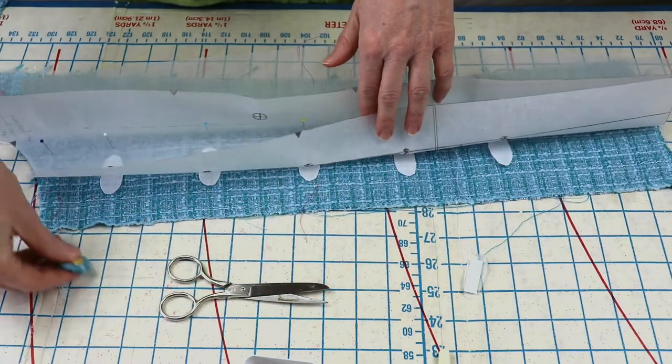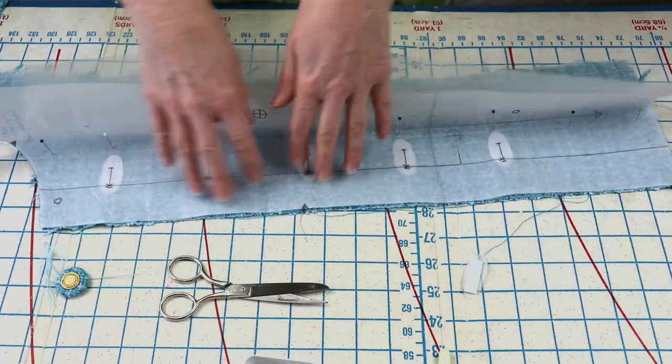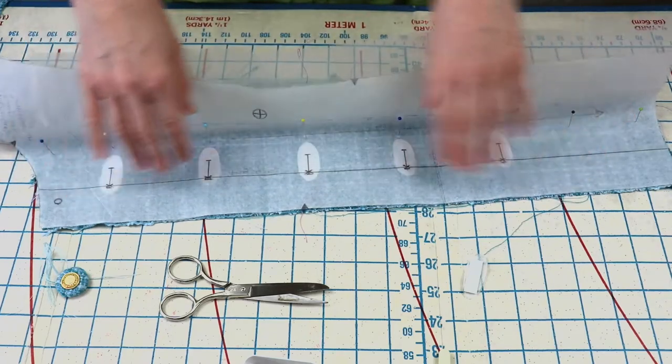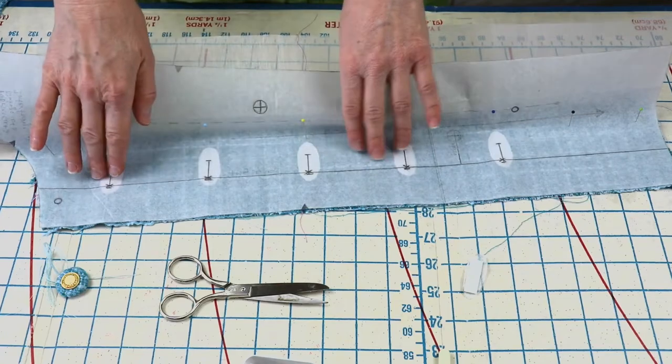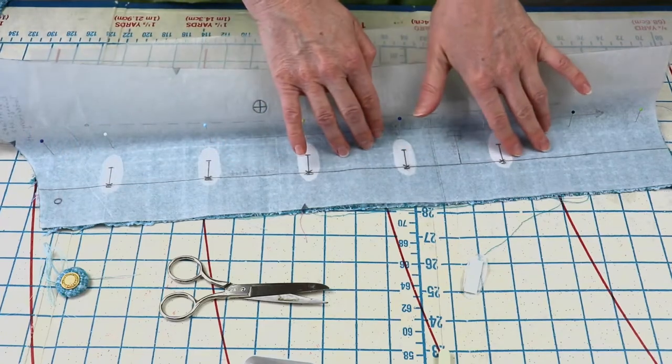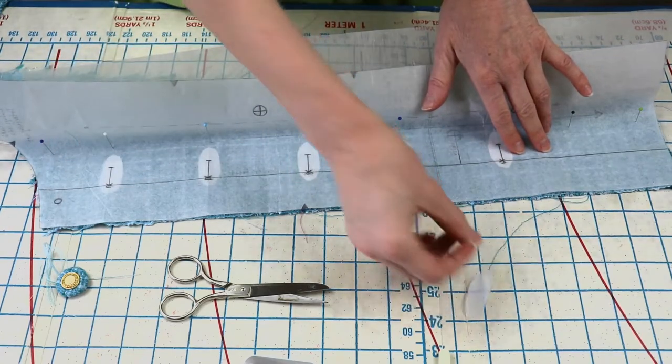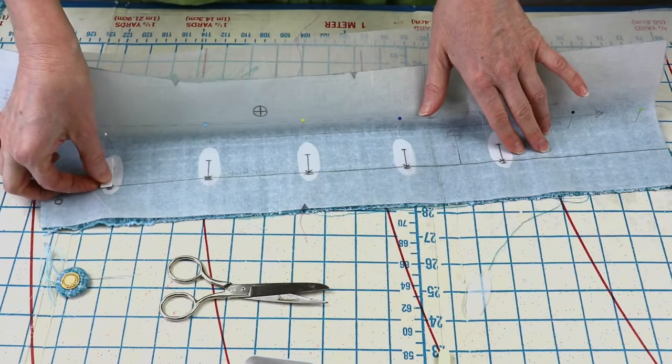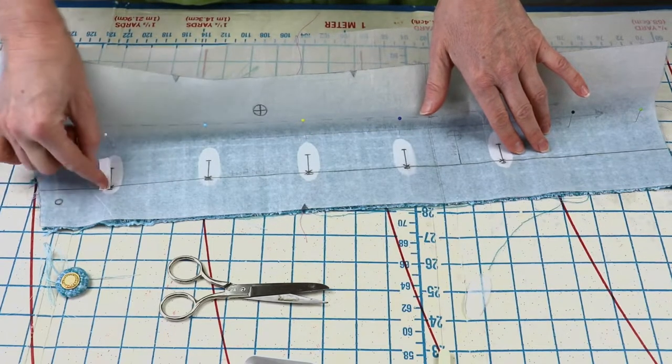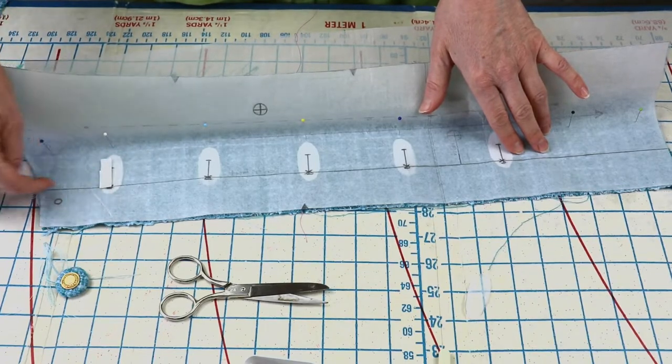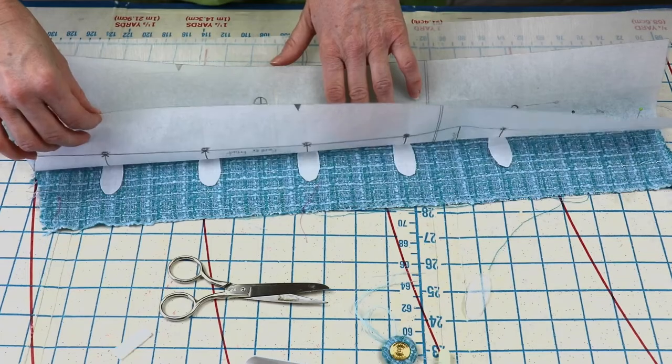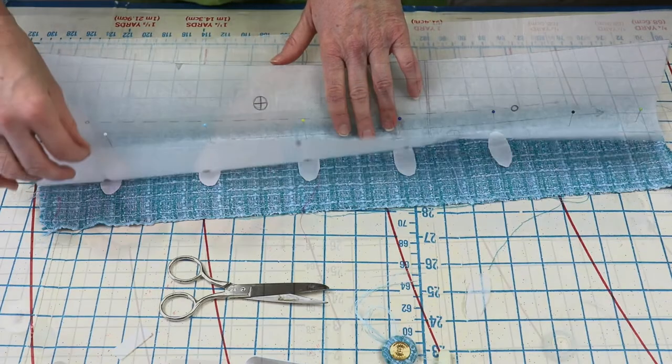I'm using my pattern, just kind of pinned it on top to see where I need to fuse these ovals. And of course, keeping in mind that my buttonhole is bigger. So from here, a little bit above the center line to all the way over here. I'm going to go ahead and fuse these pieces.